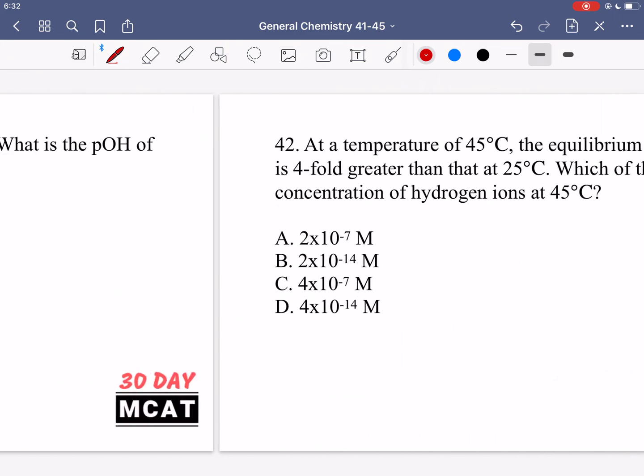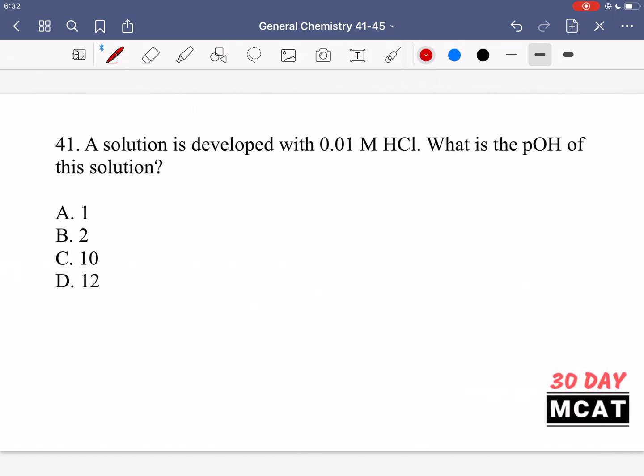Now let's go through the questions together. In question 41 it says a solution is developed with 0.01 molar of HCl. What is the pOH of the solution? So this is the concentration that we have of HCl and we're asked for the pOH. There are two ways that you can get this.